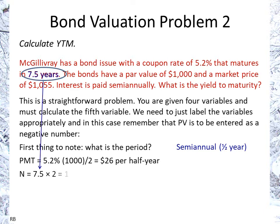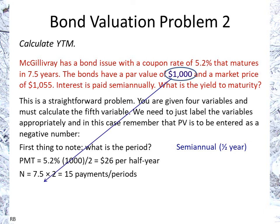We have 7.5 years as the term, and we multiply that by 2, which means we're going to have 15 payments or 15 periods. So that's going to be our N. $1,000 is our future value, or face value, or par value.